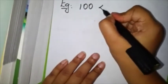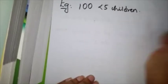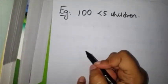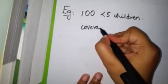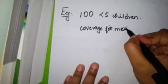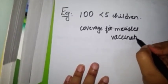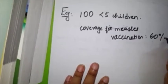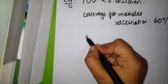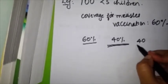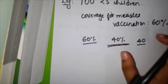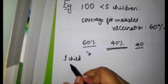I thought I'll discuss one example problem. This area has 100 less than five children, and 60% of the children were vaccinated for measles. So coverage for measles vaccination was 60%. That means 60% got vaccinated, 40% are not vaccinated—in this case, 40 children are not vaccinated.